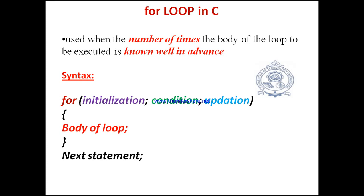The for loop is a very important loop and it is used when we know in advance how many times the body of the loop has to be executed. Sometimes we know the body of a loop has to be executed a particular number of times — in such cases we prefer to use the for loop rather than while loop or do-while loop. While and do-while loops are used when we do not know how many times the body of the loop has to be executed.